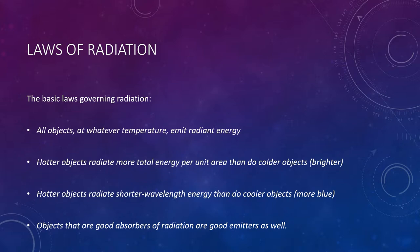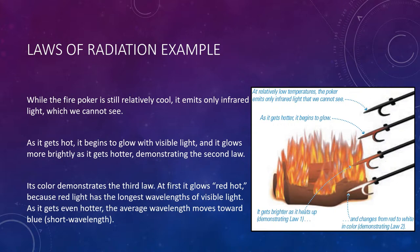You can see these laws in action with a fireplace poker or any metal object that's heated up. While the poker is still relatively cool, it emits only infrared light, which we can't see. As it gets hot, it begins to glow with more visible light, and its glow will be brighter — demonstrating that you get more energy coming out of an object the hotter it gets. Its color demonstrates the next law: at first, it will start to glow a deep red, because red light has the longest wavelength of visible light. As it gets even hotter, the average wavelength of the emitted photons will move toward the blue, shorter wavelengths. The mix of colors emitted at higher temperatures makes the poker look white — white hot rather than red hot.